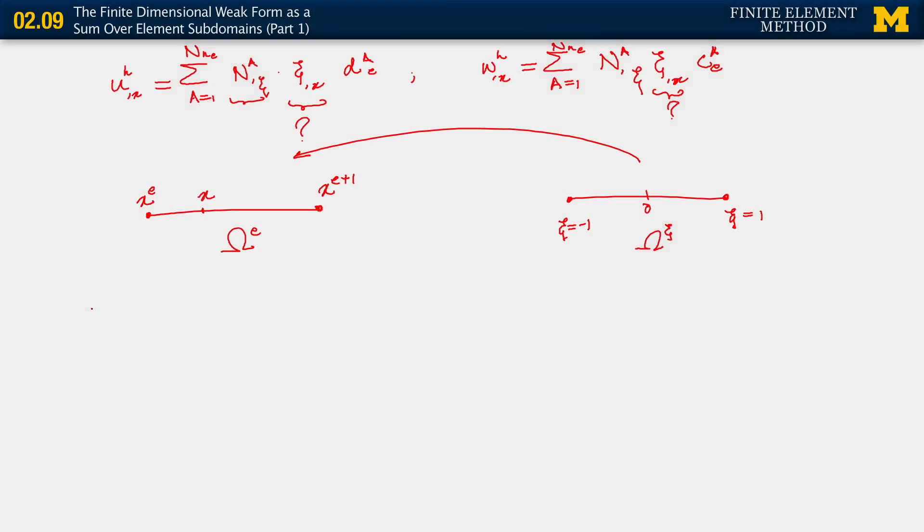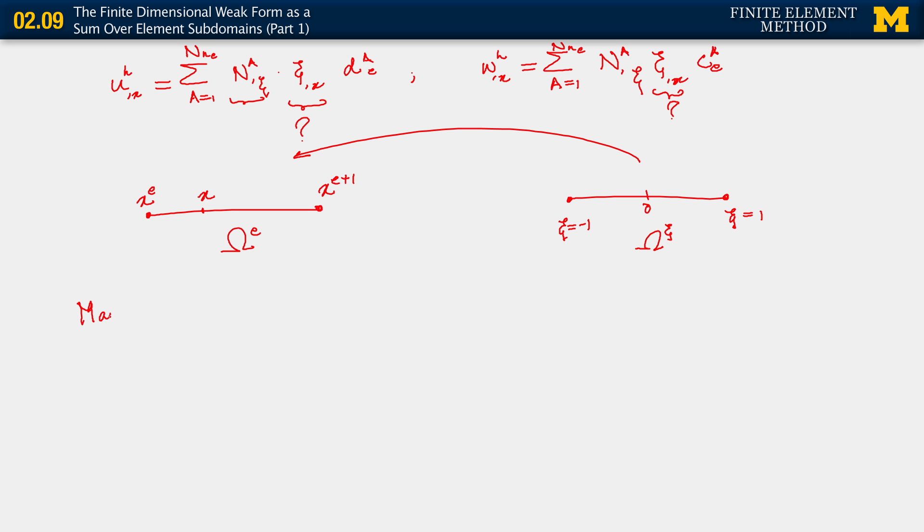Now, if we could figure out this mapping we may have a chance of figuring out what ξ,x is. And what we're going to do now is do exactly that. We're going to define this mapping to ω_e from ω_ξ.